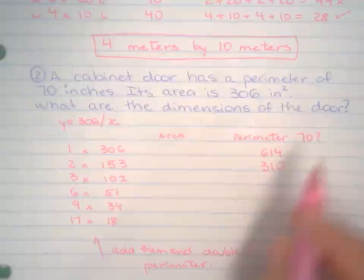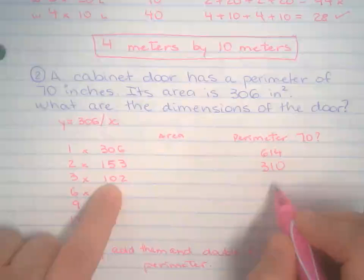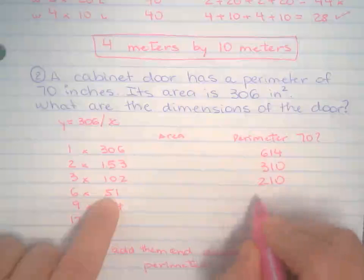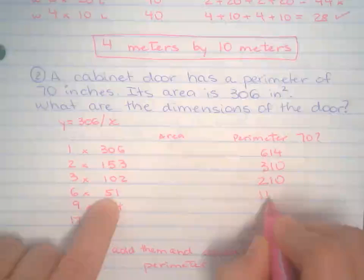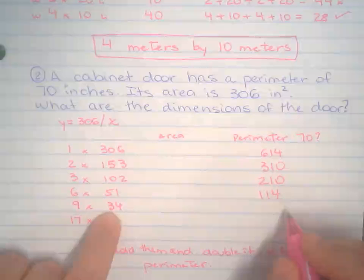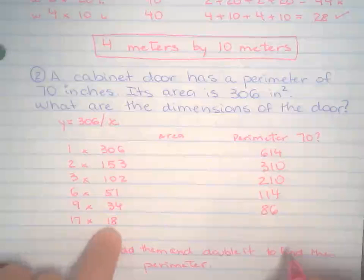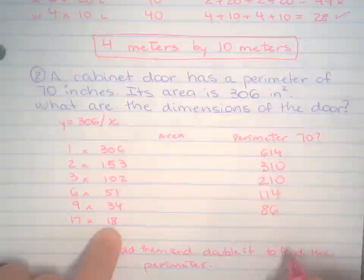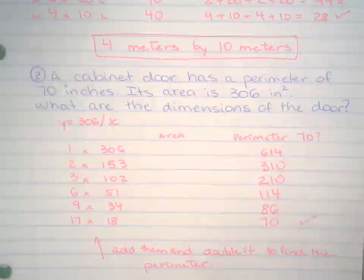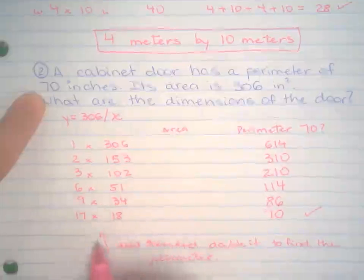I'm going to pick up the pace here, because now you know what you're doing. This guy, it's 105. Double it to 210. This is 57. Double it, 114. Here I have 43. Double it, 86. Here I have 35. Double it, 70. Aha! Why does he have to be the last one? So, there we go. These are the dimensions.